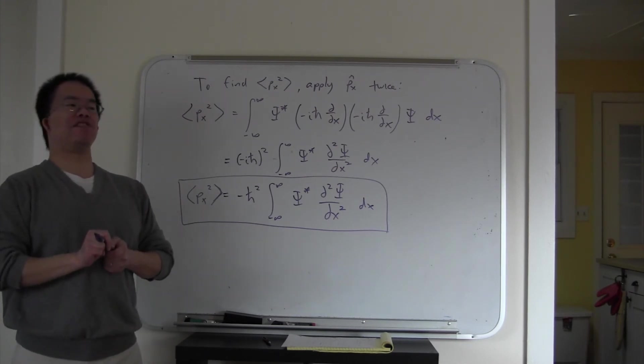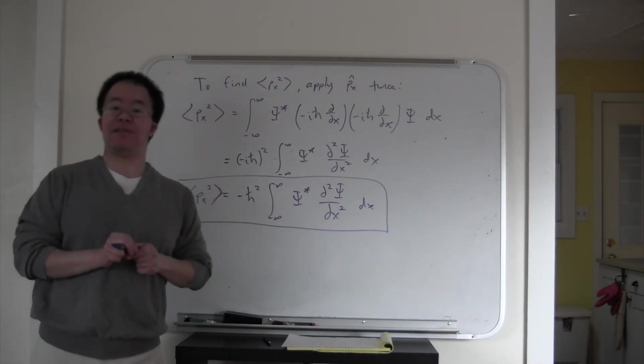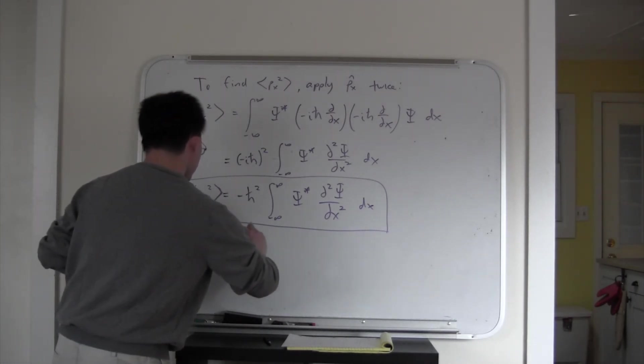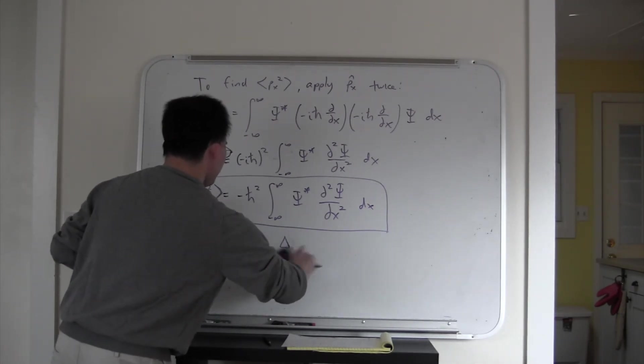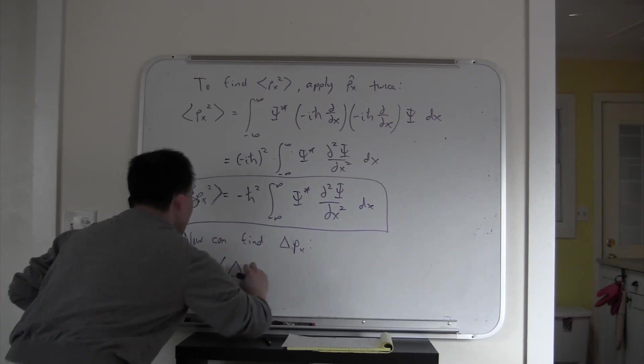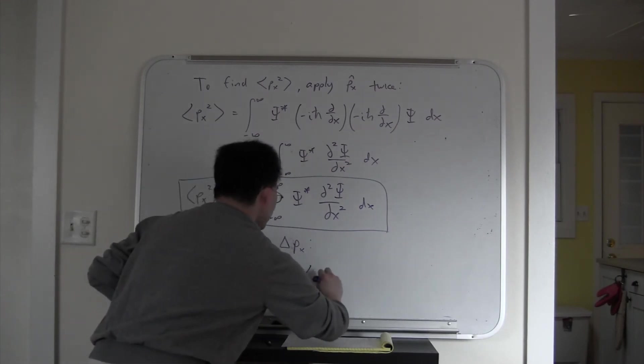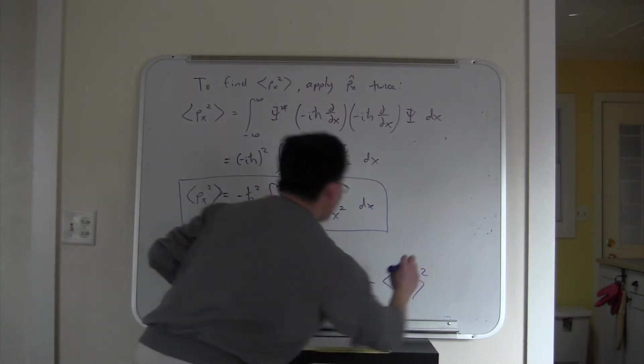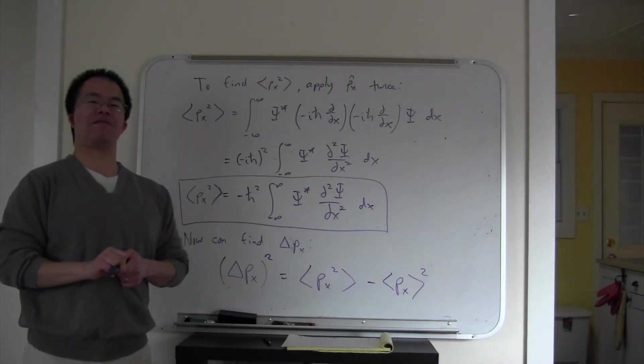That ends up giving me a minus 1. I have minus i times minus i. i squared equals minus 1. So that ends up being minus h bar squared. Psi star partial squared psi partial x squared dx. So in a second we're going to cut away to a clicker question where you can think about this expression. But before we do that, I just want to say one comment, which is that now we know how to find the uncertainty in momentum. So delta p sub x. You just have to use that theorem, which says that the uncertainty in p sub x squared is going to be equal to the expectation value of px squared minus the expectation value of px, the quantity squared. So let's now think about that clicker question.